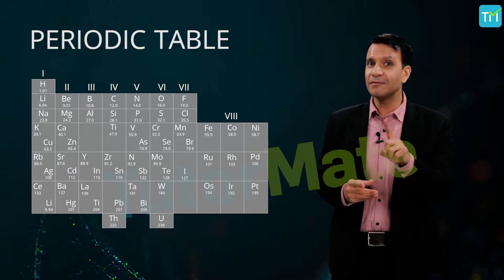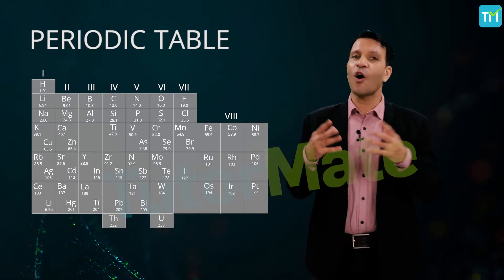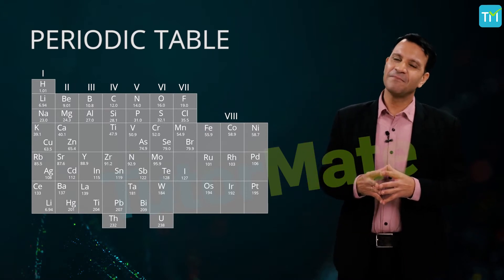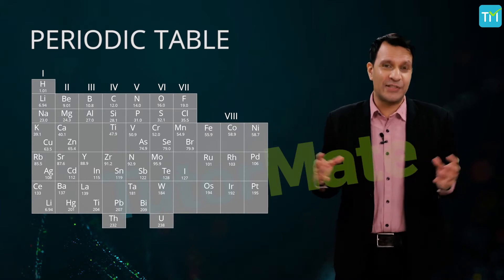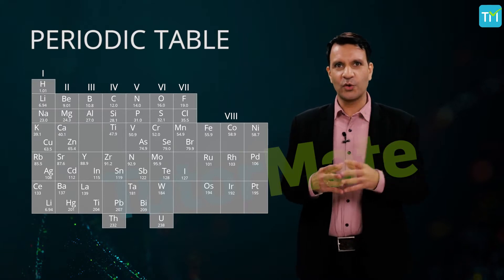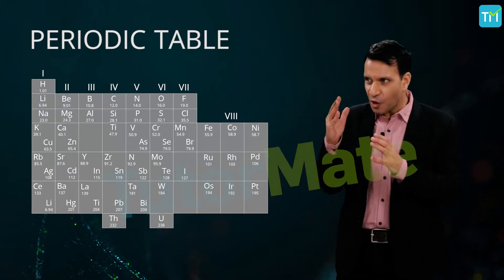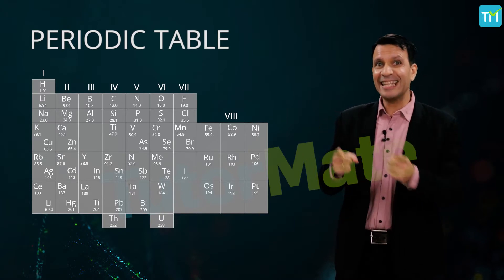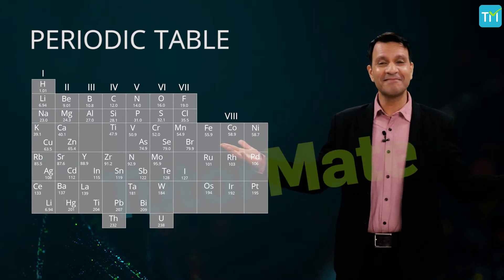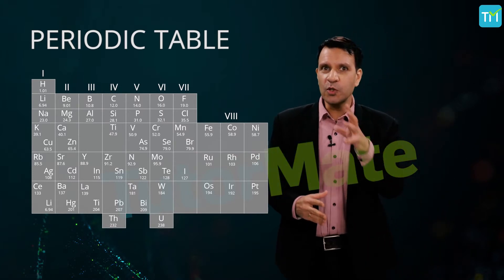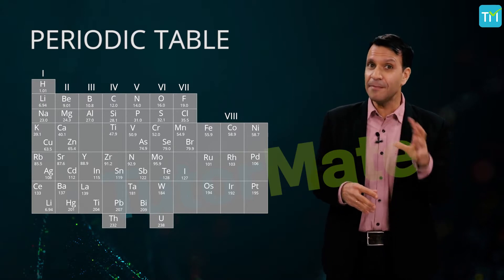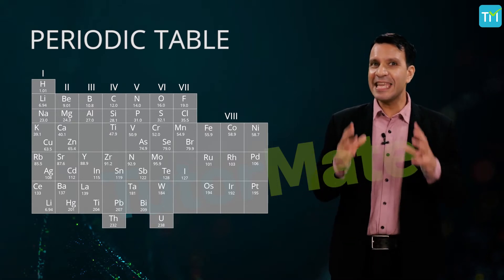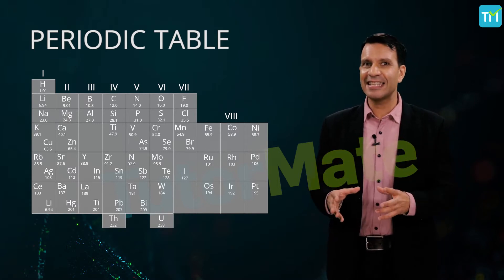Mendeleev was also the one to introduce the word 'periodic' with respect to arranging elements — a term we use to this day. But everything didn't fall into place easily; there were gaps in the horizontal rows. Instead of seeing this as a problem, Mendeleev thought it simply meant that the elements belonging in those gaps had not yet been discovered. He was also able to work out the atomic masses of the missing elements and predict their properties. For example, he left a gap after aluminium and named the undiscovered element eka-aluminium.